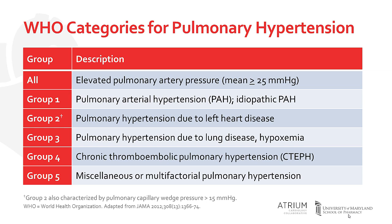Group 2 is the largest category and represents those who have pulmonary hypertension as a result of left heart disease and the increase in pulmonary pressure that often results from volume overload. Group 3 are those with pulmonary hypertension due to chronic lung diseases, such as chronic obstructive pulmonary disease, or COPD. Group 4 represents those with chronic thromboembolic pulmonary hypertension, or CTEPH. Group 5 is a category that represents miscellaneous etiologies, or those where a single cause is difficult to determine.